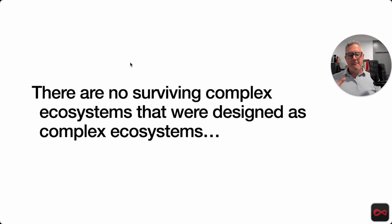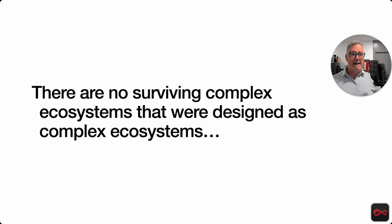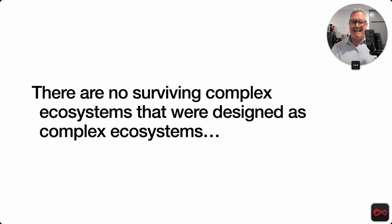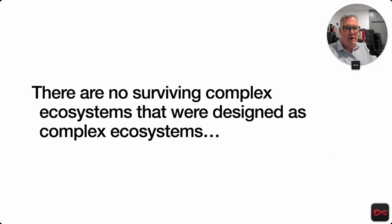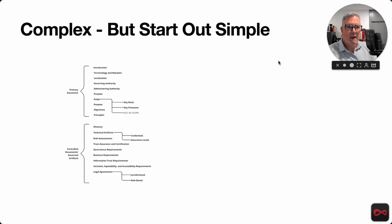There's a general premise we operate on at Continuum Loop: there are no surviving complex ecosystems that were designed as complex ecosystems. If you know of one, please let me know, but I've not found any — especially when they're operating as designed. They typically evolve from simple systems that work together and create the complexity. They do not come pre-designed as complex; it just never works that way. They're complex, but they start out simple.